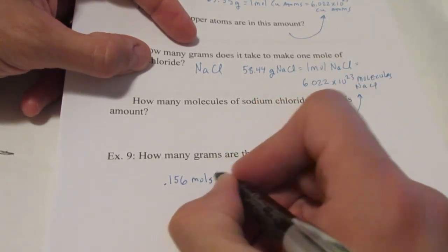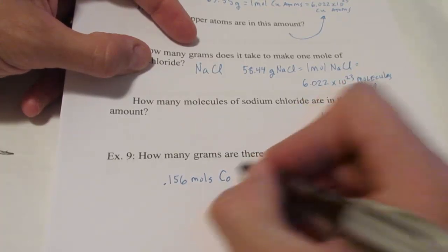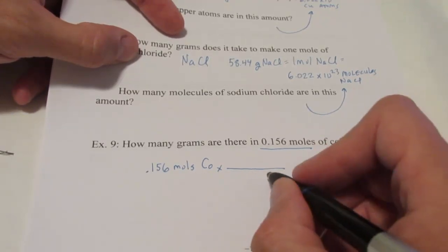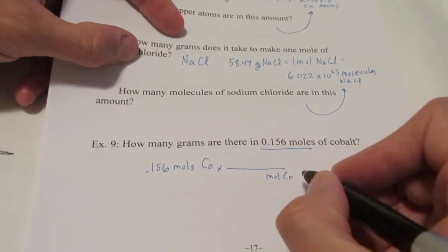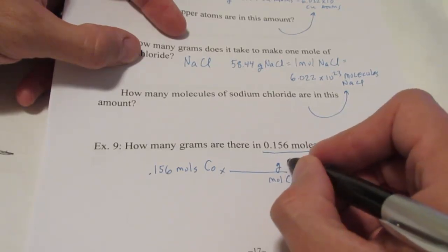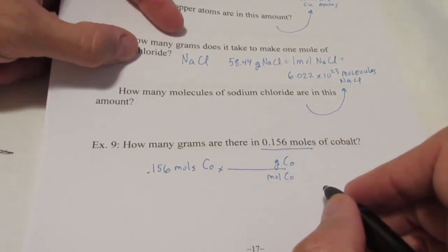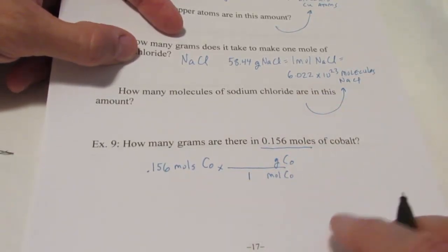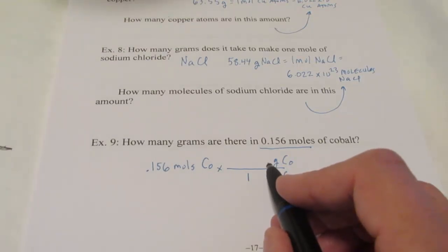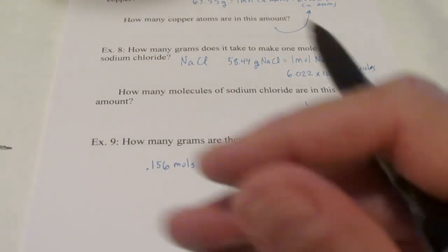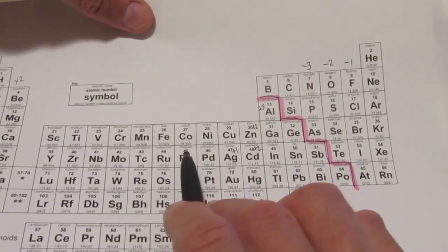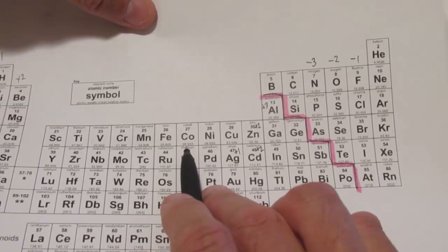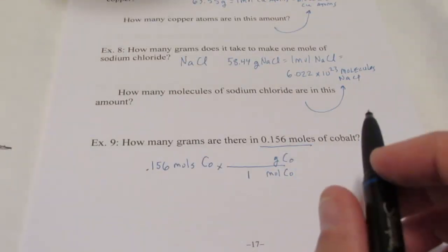So if I have 0.156 moles of cobalt, CO, we're going to do our dimensional analysis. We're going to put moles of cobalt on the bottom, and I want to get into grams. So I'll put that on top. Now, a little hint here. Whenever you do these calculations, immediately put the number 1 by mole. How do I find the number of grams in 1 mole of cobalt atoms? Well, do you remember? Yeah, we use our periodic table. So it says the atomic mass of cobalt is 58.933 grams per mole.